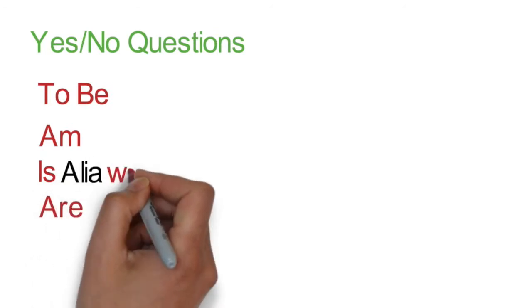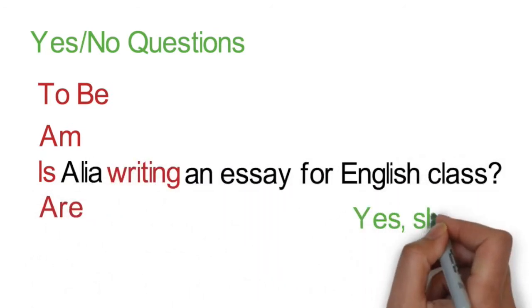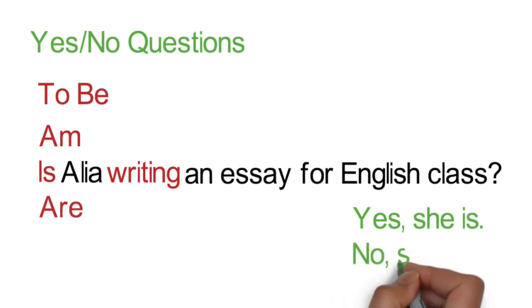For example, is Alia writing an essay for English class? And the answer would be either, yes she is, or no she isn't. Remember that she refers to Alia, and is is the correct form of the verb to be with a singular female, such as Alia or she.